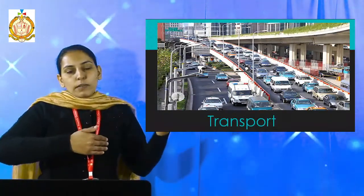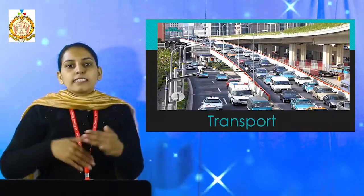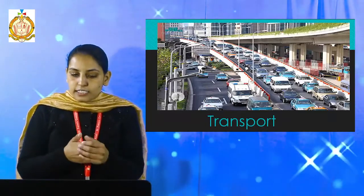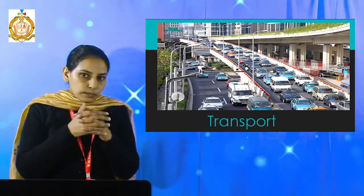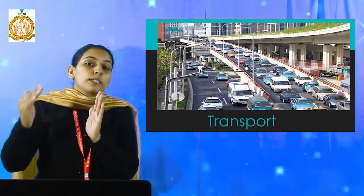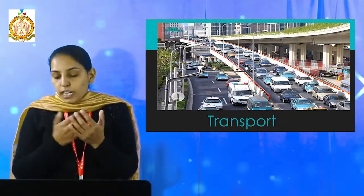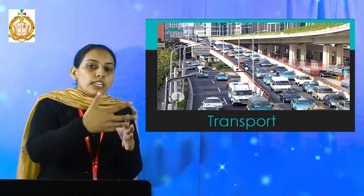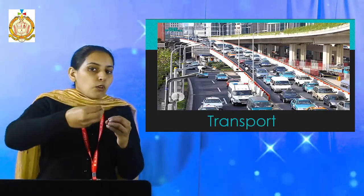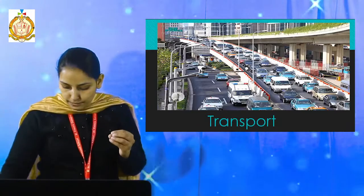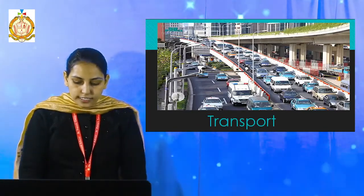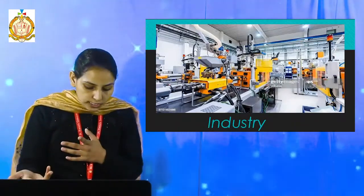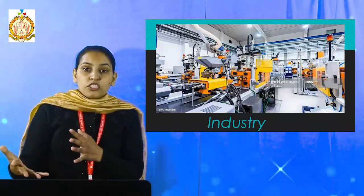In the same way as natural source is divided into subcategories, manmade source is also subdivided into various categories. First one is transport — transport is the main source that produces sound, for example automobiles, buses, trucks, rail engines, etc. These are manmade because transport is made by humans. Next one is industry — machines in industries can also produce sound, for example digging and blasting machines.